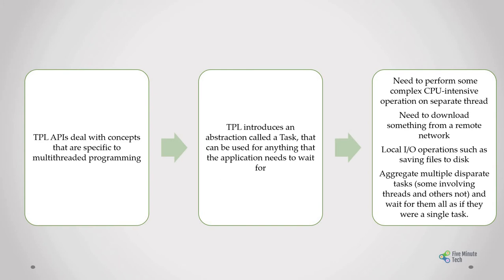TPL introduces an abstraction called a task that can be used for anything that the application needs to wait for — such as performing complex CPU-intensive operations on a separate thread, downloading something from a remote network, performing local I/O operations like saving a file to disk, or aggregating multiple disparate tasks — some involving threads and others not — and waiting for them all as if they were a single task.